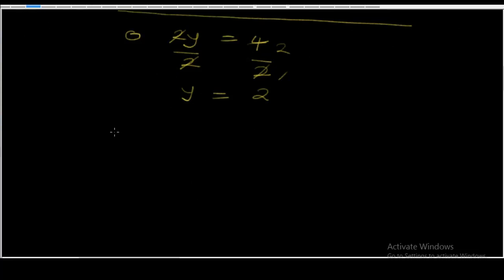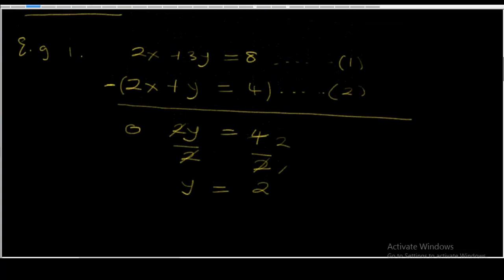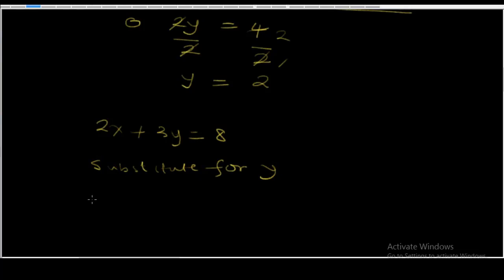Now let's pick any of the equations — let's pick equation 1: 2x plus 3y is equal to 8. We substitute for y. Since y is equal to 2, I'm going to write 2x plus 3 times 2 is equal to 8. So 2x plus 6 is equal to 8.